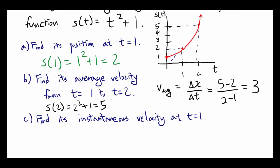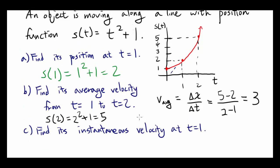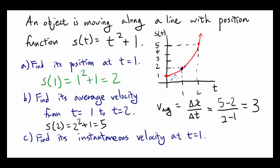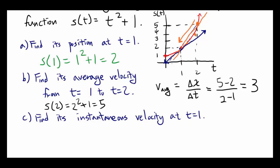Now let's find the instantaneous velocity at t equals 1 — the velocity at exactly t=1, not from t=1 to t=1.1 or t=1.00001. The instantaneous velocity can be found by finding the slope of the tangent line. The average velocity is the slope of the secant line, and as you move that second point ever closer to t=1, you get closer and closer to the instantaneous velocity. At exactly t=1, the limit of the average velocity gives you the tangent line slope.